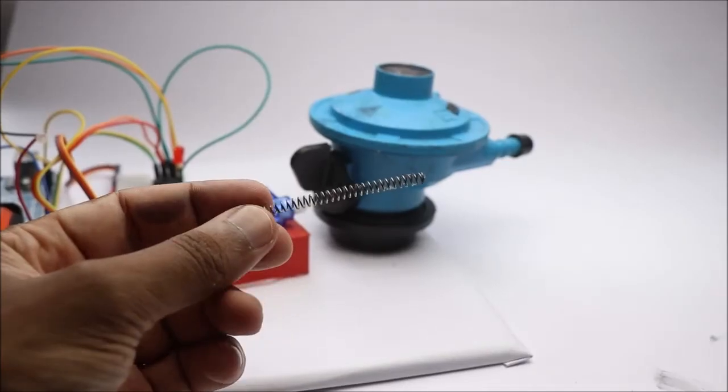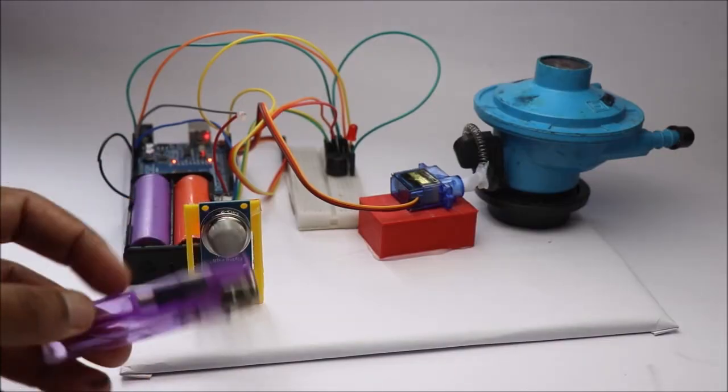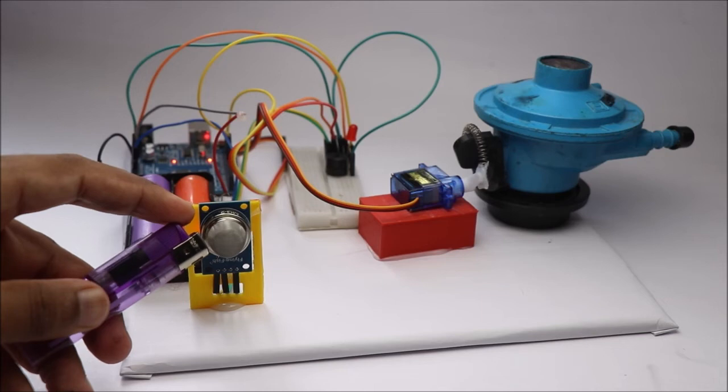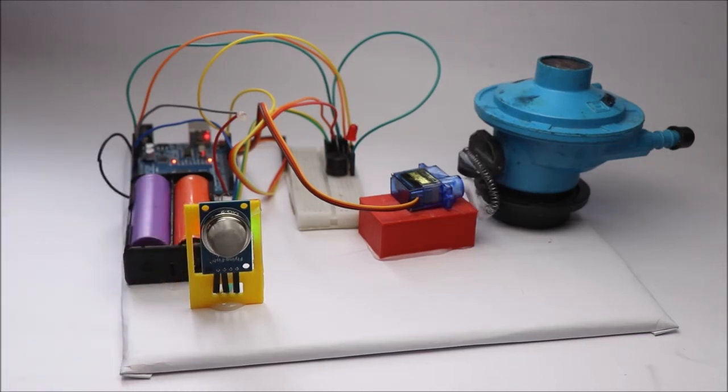For the auto cut-off mechanism, I will use a piece of spring. Now you might think, how does this project work? When the sensor detects the gas or smoke, it triggers an alarm along with red light.